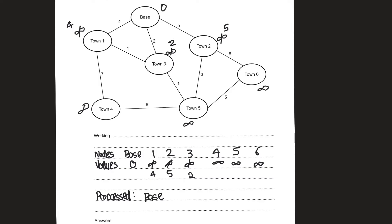The next town with the least value is town three. Let's see what nodes are connected to town three — we have town one and town five. For town one, we add two plus one: going through town three to town one gives a distance of three. Three is lower than the current value of four, so we update it — we now have a shorter path to town one. For town five we also get a new value: two plus one equals three.